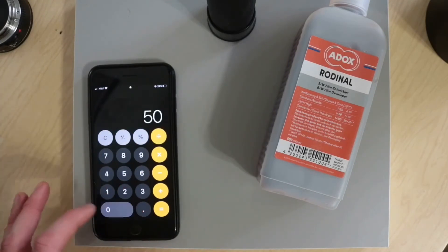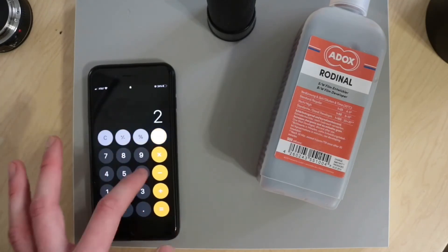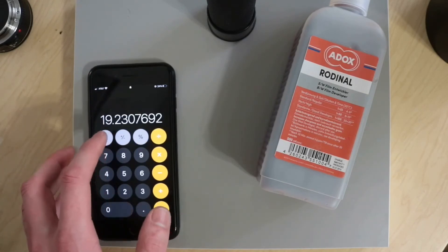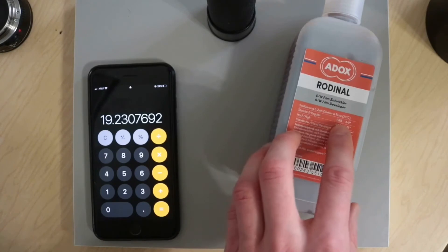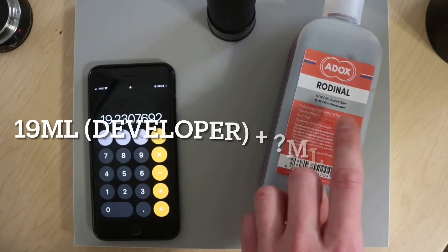And we're going to take our final volume and divide it by our total parts. So 500 milliliters divided by 26, and you'll get the value of 1 part. So that's going to be 19 parts developer.